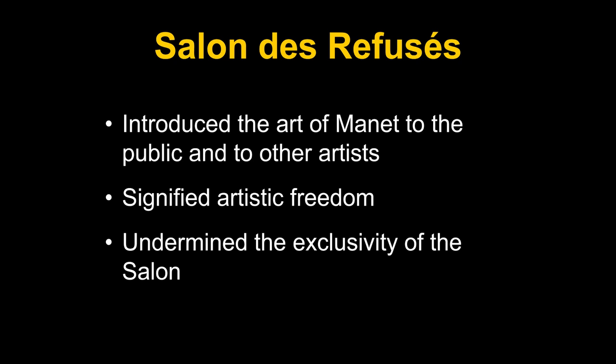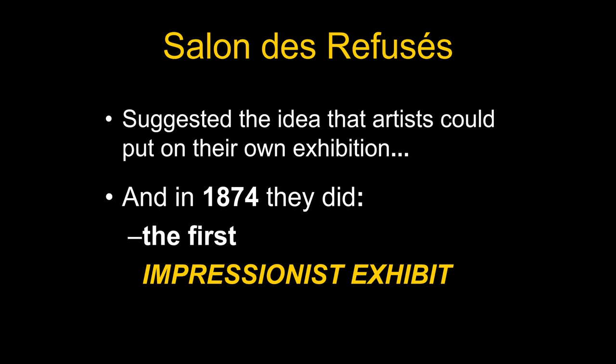It didn't bring an immediate change. Other things occurred, including in 1871 and 1872, the invasion of the Prussians and the Franco-Prussian War. But eleven years later, in 1874, there was a result. A group of artists got together and put on their own exhibition. They called themselves the Society of Anonymous Artists, but we know their exhibition now as the first Impressionist exhibit. They continued to have exhibits for some years.